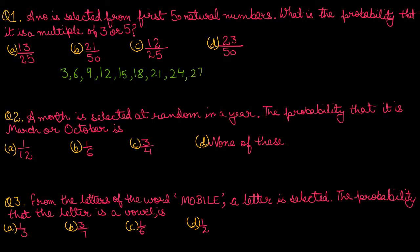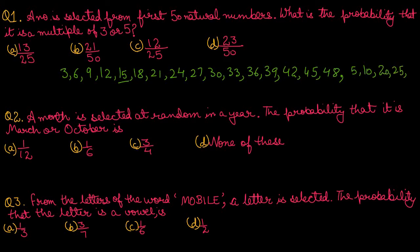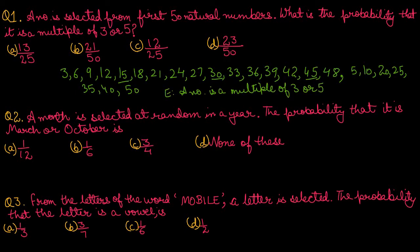The multiples of 3 continue. Now if we look at the multiples of 5, they will be 5, 10, 15 — 15 is already included — then 20, 25, 30 — already included — 35, 40, 45 — already included — and 50. So our event E is 'a number is a multiple of 3 or 5.' The number of favorable cases is 23, and total natural numbers are 50. So the answer will be 23 upon 50. Correct option is D.